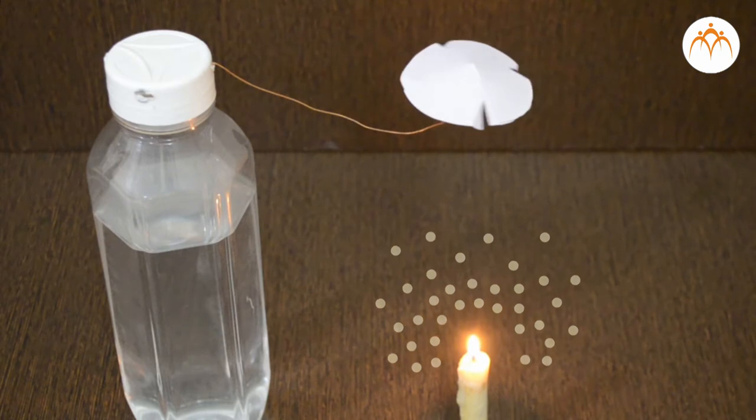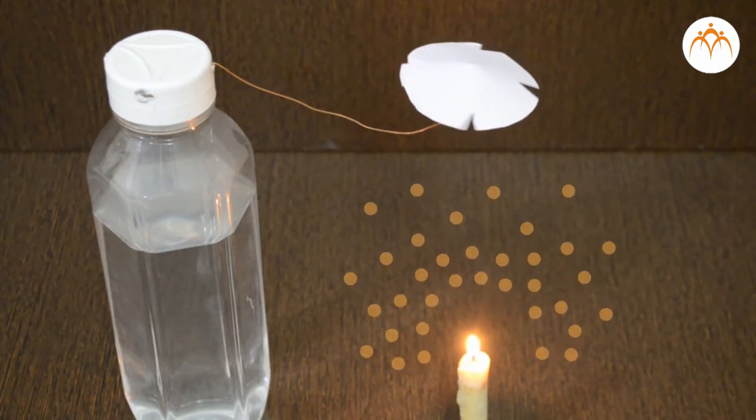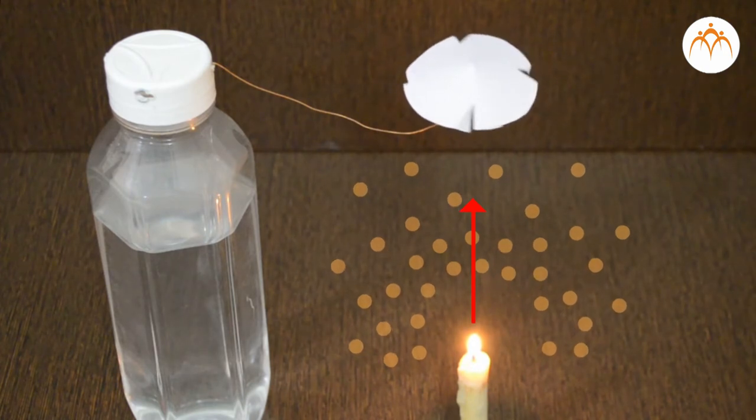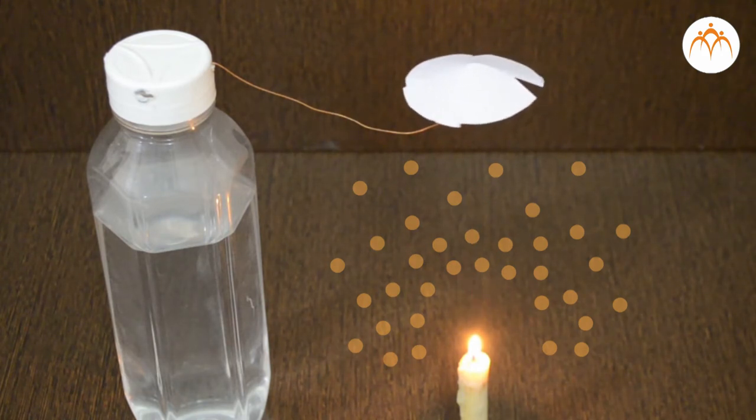As air becomes hot, it becomes light. Lighter objects move up when surrounded by the dense objects. Lighter hot air is surrounded by dense cold air. Air like water also shows similar behavior when heated.